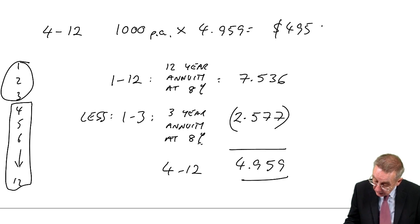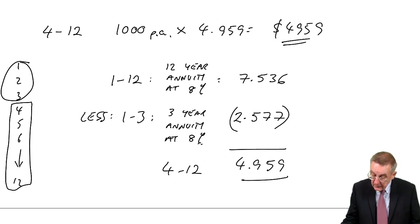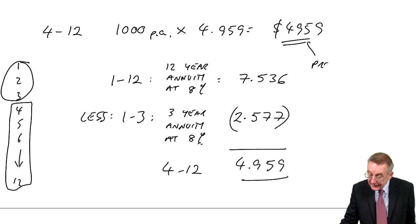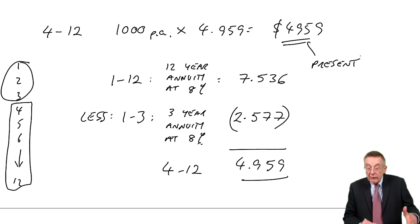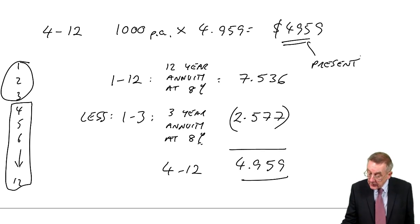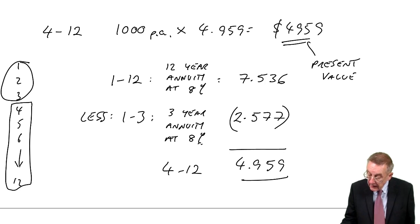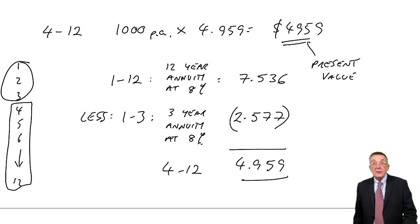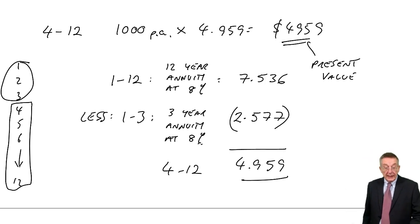Now we can apply it to our annuity. The present value of nine receipts of 1,000 at 8% uses a factor of 4.959.